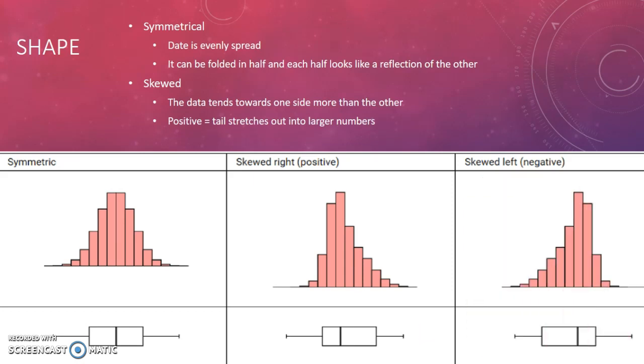A negative skew looks the opposite of a positive skew. This time you can see the tail is going down into the smaller numbers or even the negative numbers. Likewise, the box plot looks bigger on the lower side than on the higher side because it's stretching out towards those negative numbers. That's a negative skew.